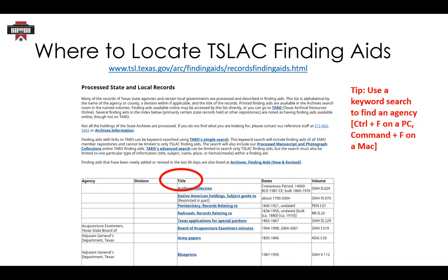You might be wondering, why is it called Processed State and Local Records? This table lists finding aids for records that have been processed, but a portion of our holdings remain unprocessed. Unprocessed records don't have finding aids, so they won't be listed here. If you don't find what you're looking for, ask us and we'll be happy to help.